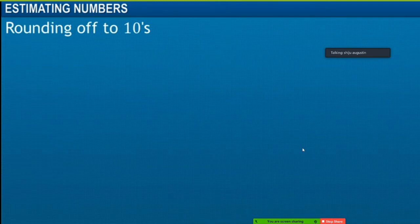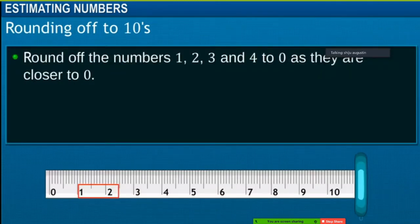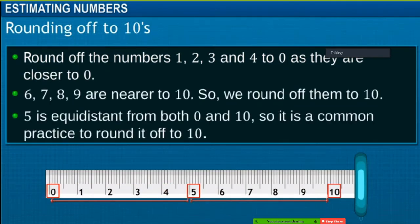Numbers 1, 2, 3, and 4 are rounded off to 0 as they are closer to 0. Whereas numbers 6, 7, 8, and 9 are nearer to 10, so we round them off to 10. Number 5 is equidistant from both 0 and 10, so it is a common practice to round it off to 10.